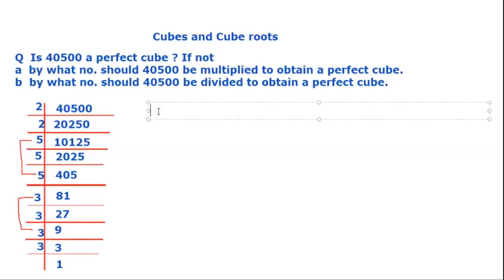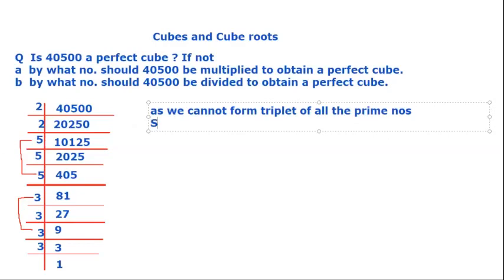So, first of all we will write as: We cannot form triplets of all the prime numbers. So, this number is not a perfect cube.